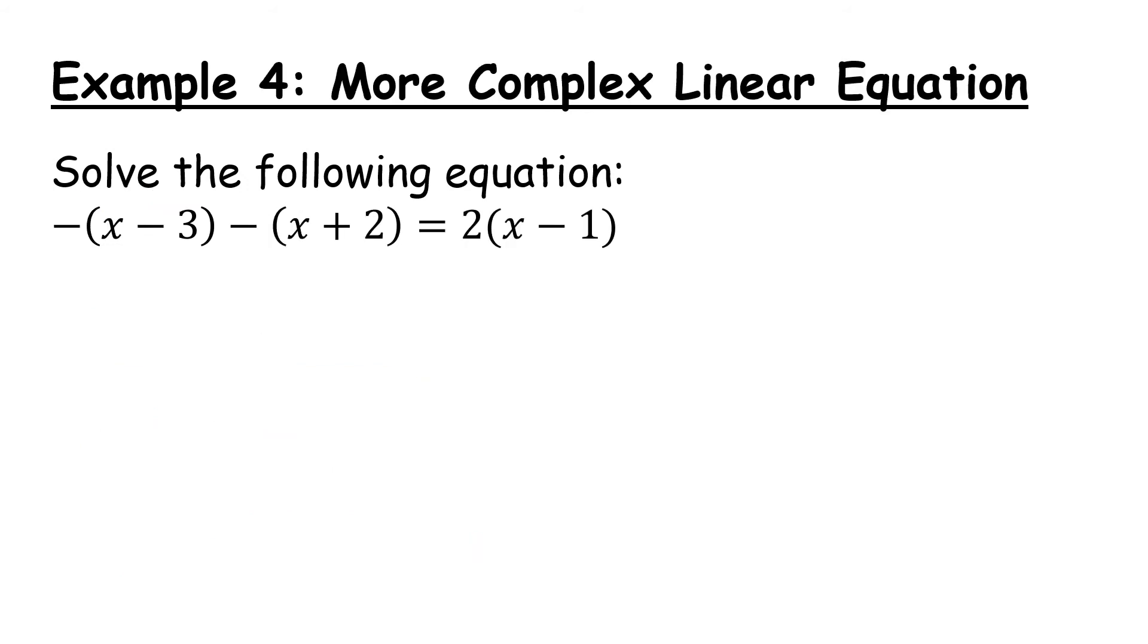Let's look at a more complex linear equation. We're asked to solve this equation here. So this equation has three different brackets and also some negatives which can cause problems. What I would suggest is that whenever you see a minus in front of a bracket, to help you, you can put in a 1. Remember, we're just too lazy to write that one. We are now talking about minus 1 times everything in the bracket. So we're left with minus 1x or just minus x if you prefer, plus 3 minus 1x minus 2 equals 2x minus 2.